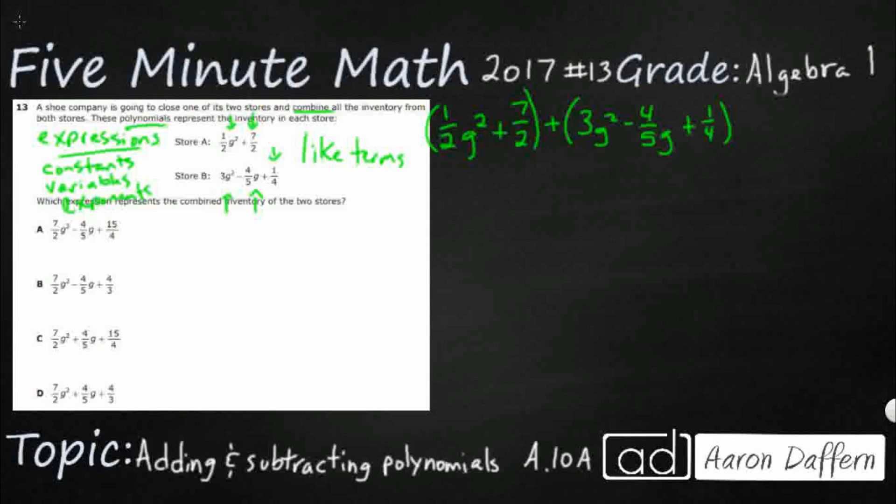So it looks like I've got three levels of my polynomial. I'm going to have G squareds. I've got one right here. I've got one right here. I'm going to have 1 G. But it's on its own. You cannot combine that with the G squared. Totally different. And then I've just got numbers. Constants. So I've got 7 halves. And I've got 1 fourth.